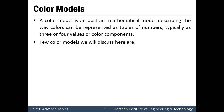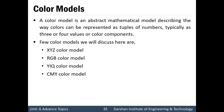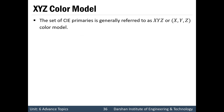A few color models we will discuss here are the XYZ color model, RGB color model, YIQ color model, and CMY color model. First, the XYZ color model: a set of CIE primaries is generally referred to as the XYZ color model. Here we do not specify any primary colors — they are just named X, Y, and Z. Any primaries can be taken which will give a wide range of color when combining these three primary colors.